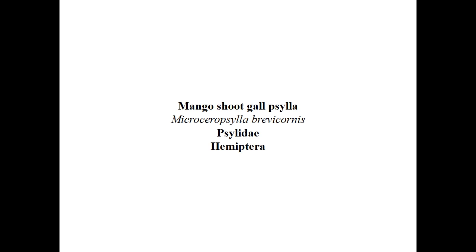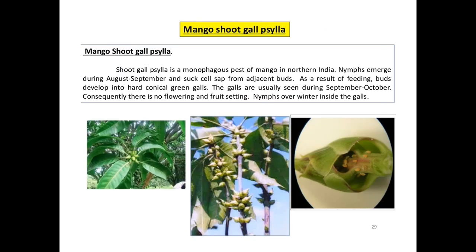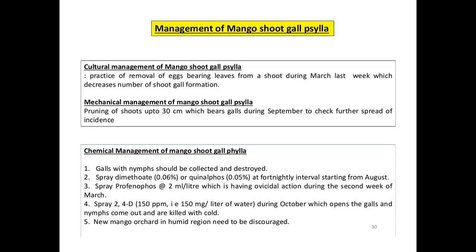Coming to mango shoot gall psylla — Microcerodes brevicornis, family Psyllidae, order Hemiptera. It is a monophagous pest of mango in northern India. Nymphs emerge during August to September and suck cell sap from adjacent buds; as a result buds develop into hard conical green galls. Galls are usually seen during September to October; there is no flowering or fruit setting; the insect overwinters inside the galls. Management: dimethoate, profenofos, or 2,4-D; keep the orchard clean and hygienic.